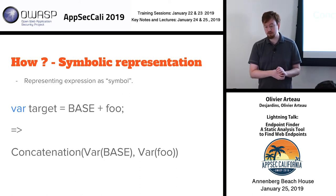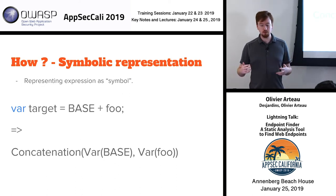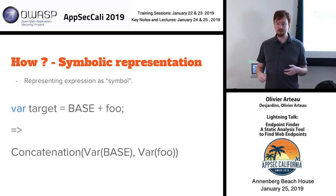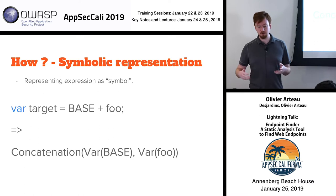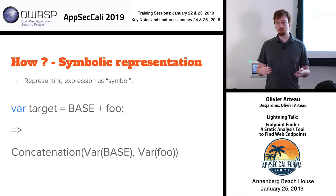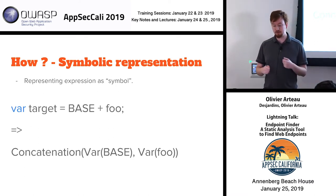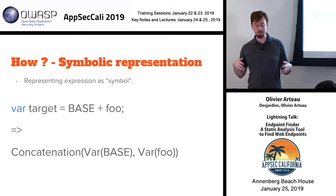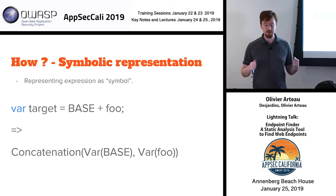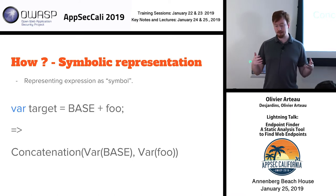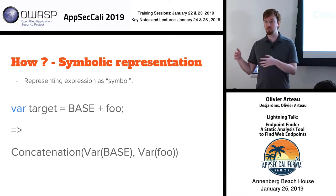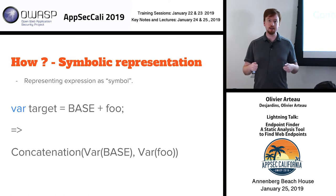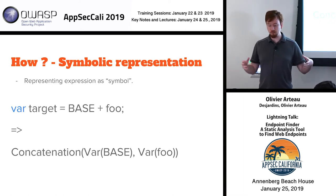Symbolic representation basically means that instead of dealing with actual values, we represent variables as symbols. So if we don't know the value that base and foo hold, we simply represent the value of target as a concatenation of two variables. Eventually, if we can concretize the value and replace those values afterwards, we use this symbolic representation.